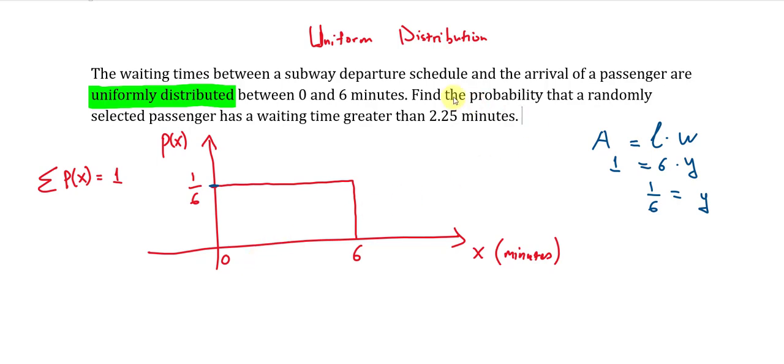And now the question is finding the probability that a randomly selected passenger has a waiting time greater than 2.25 minutes. So let's call this point 2.25. We are looking for all the values that are greater than 2.25, or we are looking for this area under the curve from 2.25 up to 6. So now you are looking for this area right here. And that's pretty simple.